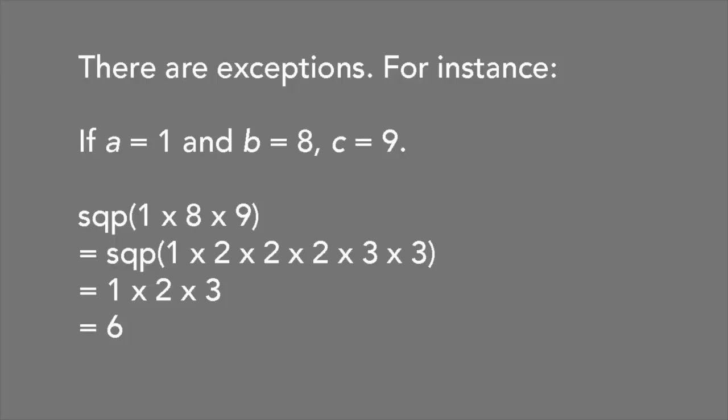Similarly, if A equals 3 and B equals 125, the ratio is 15 over 64. And if A equals 1 and B equals 512, the ratio is 2 over 9.